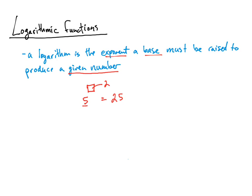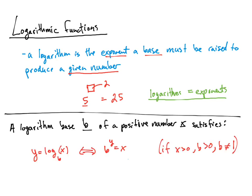An even simpler way of saying this is that logarithms equal exponents. This is a general guiding principle — logarithms always equal exponents. For a more technical definition, a logarithm base b of a positive number x satisfies two related equations.